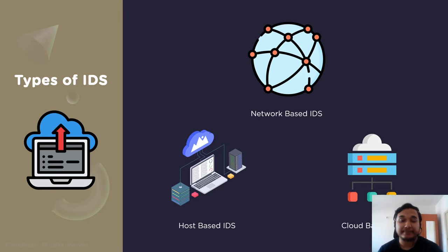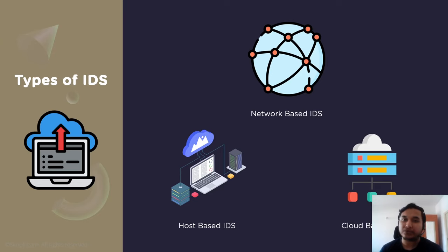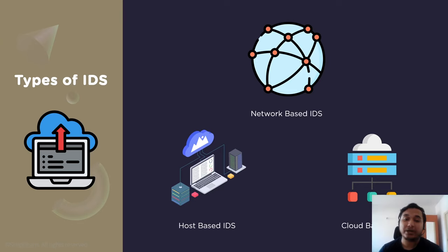The third variant is a cloud-based intrusion detection system. Because of the internet-facing nature of the cloud, on-premises IDS solutions are not necessarily optimized for cloud monitoring. Network-based sensors need to be deployed within the cloud environment's network perimeter, yet a cloud service provider may or may not have a way to facilitate this. Cloud-based IDS use purpose-built cloud sensors that leverage cloud service provider APIs to get as much visibility as possible into your cloud environment.